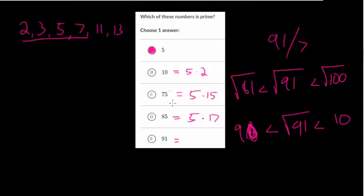So we can check 91 divided by 7. Because assuming this is right, this should be composite so this will probably work. 7 goes into 9 one time and there's 2 left over. 7 goes into 21 three times. So 91 is really just 7 times 13.